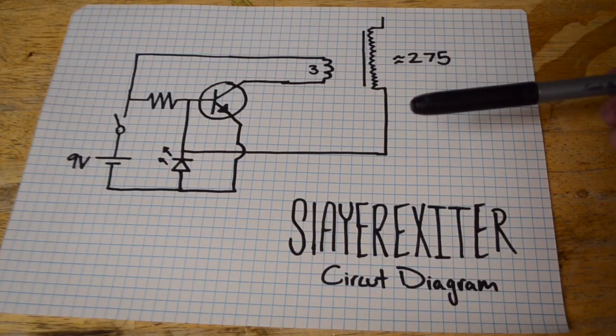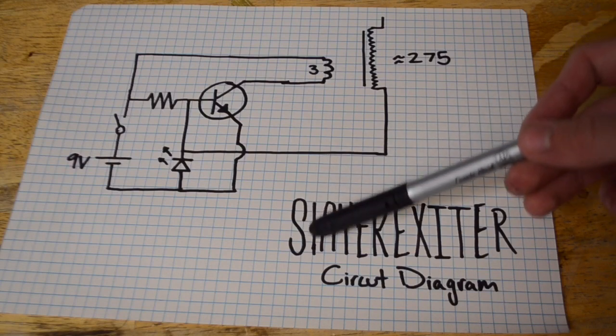Alright, so before we begin, let's understand how this circuit works. First off, this circuit is known as the Slayer Exciter Circuit.